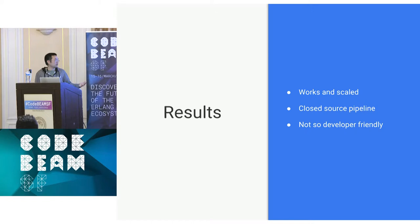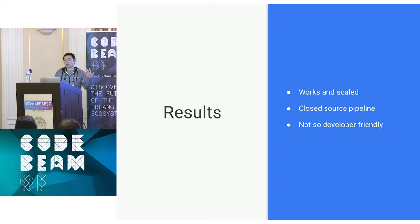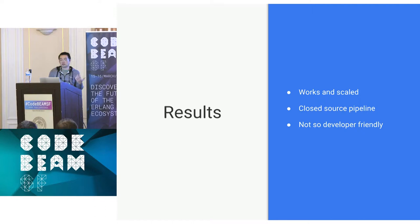How did this one work out? It worked out well and it scaled. For many APIs, these are still the only official libraries available. But because it was a closed source pipeline, you really couldn't take advantage of the community. If there were bugs in the generator, all you could get was bug reports — the community couldn't come in and help fix them. And these libraries still weren't as developer-friendly as they could be, lacking the higher-level abstractions you might expect from a nice client library.